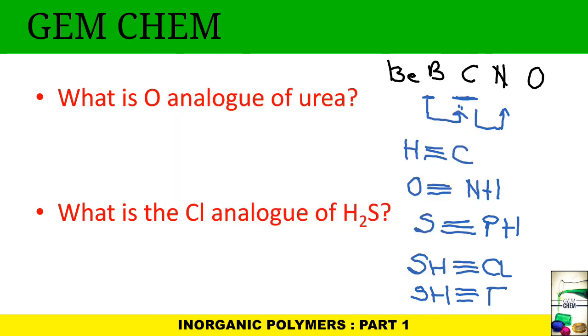If we try to do the first question, then oxygen analog of urea—what is urea? Let us write. This is urea, right? If someone is telling you write the oxygen analog, you will replace one of the nitrogens and hydrogen with one oxygen. It will look like this—that is OH and OH—so it is actually H2CO3.